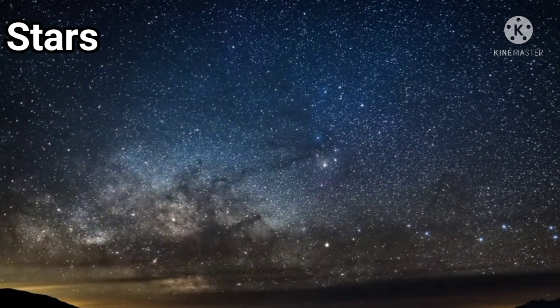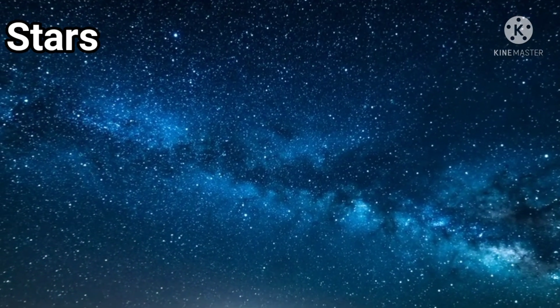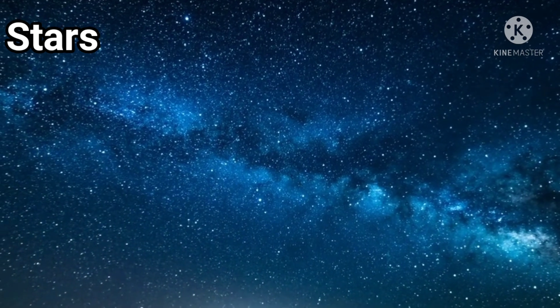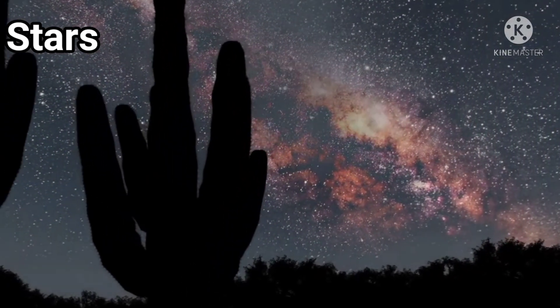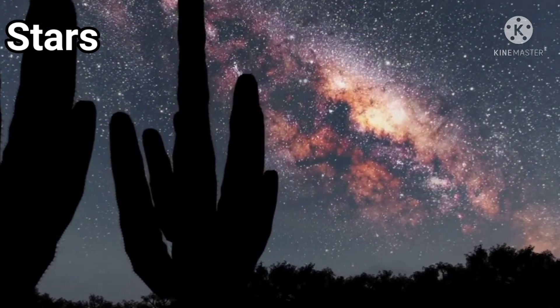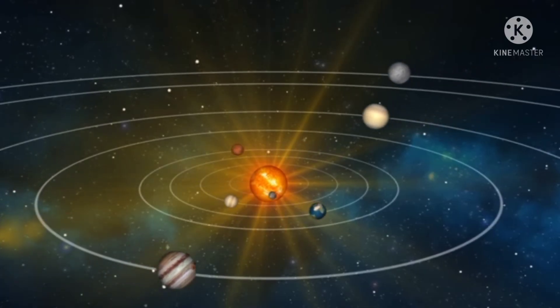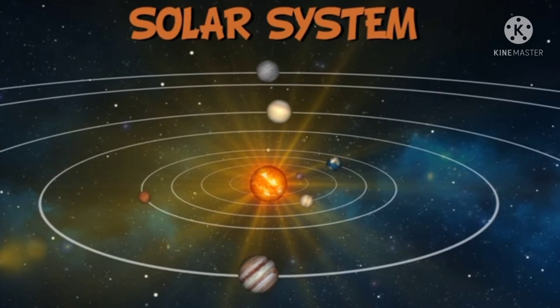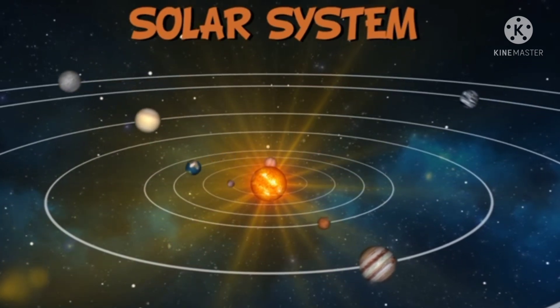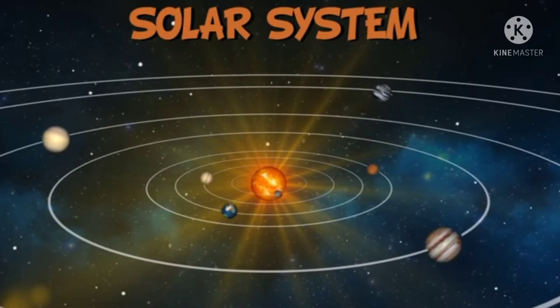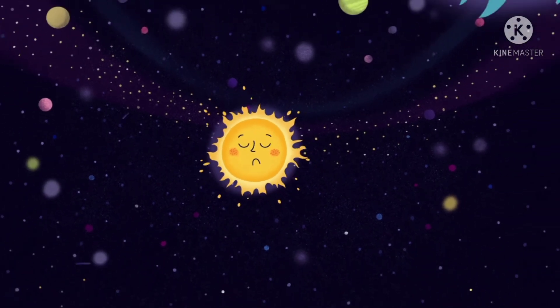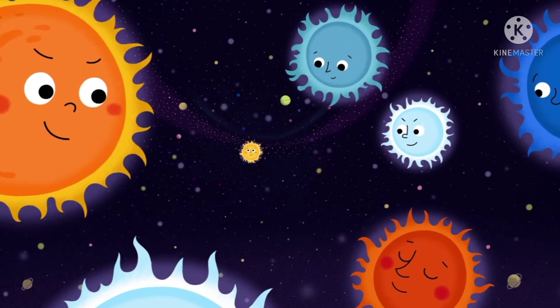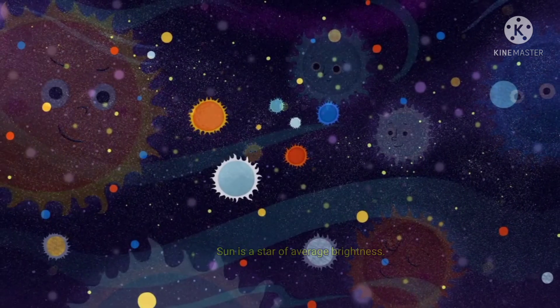As we all know, there are a very large number of stars in our sky. These are huge spheres of very hot gases having light of their own. The sun, which is the central part of the solar system, is also a star and its brightness is less than that of many stars. We can see the sun is a star of average brightness.